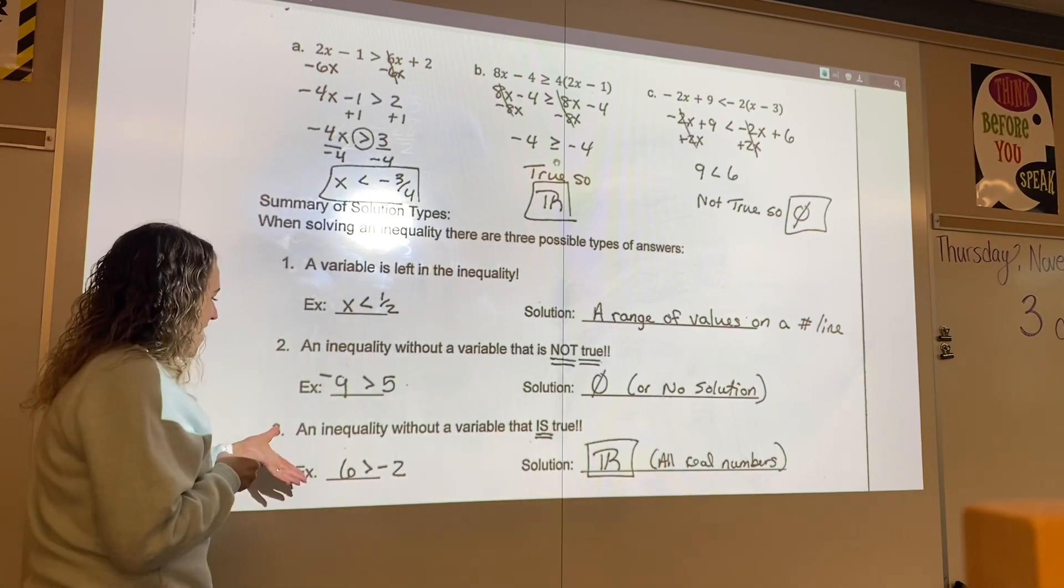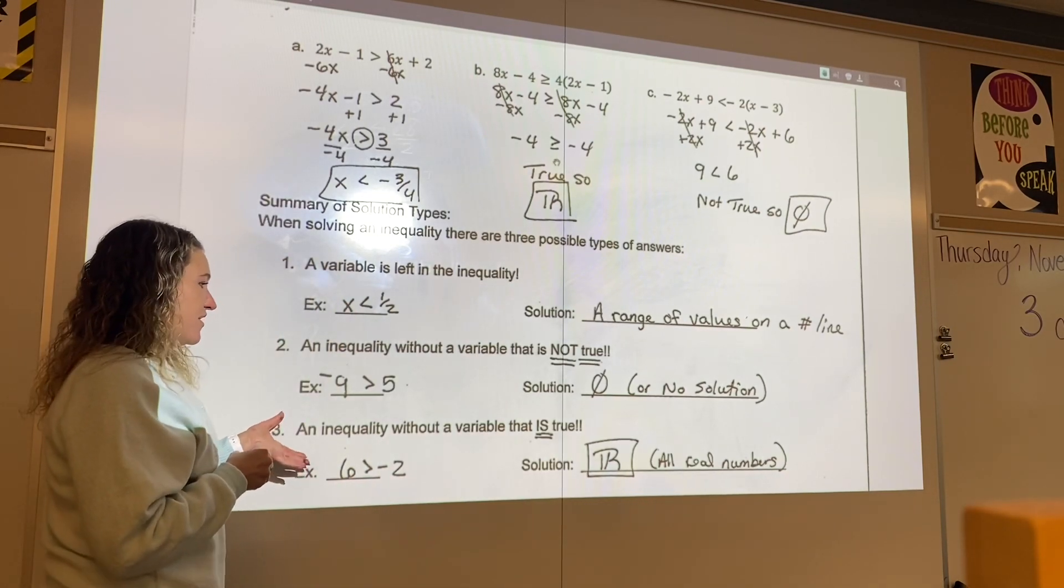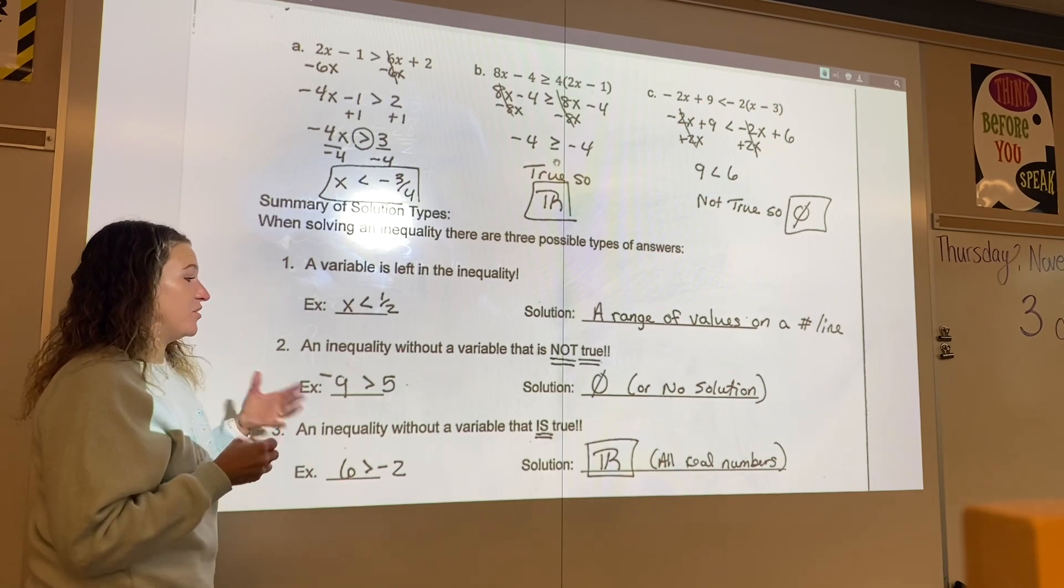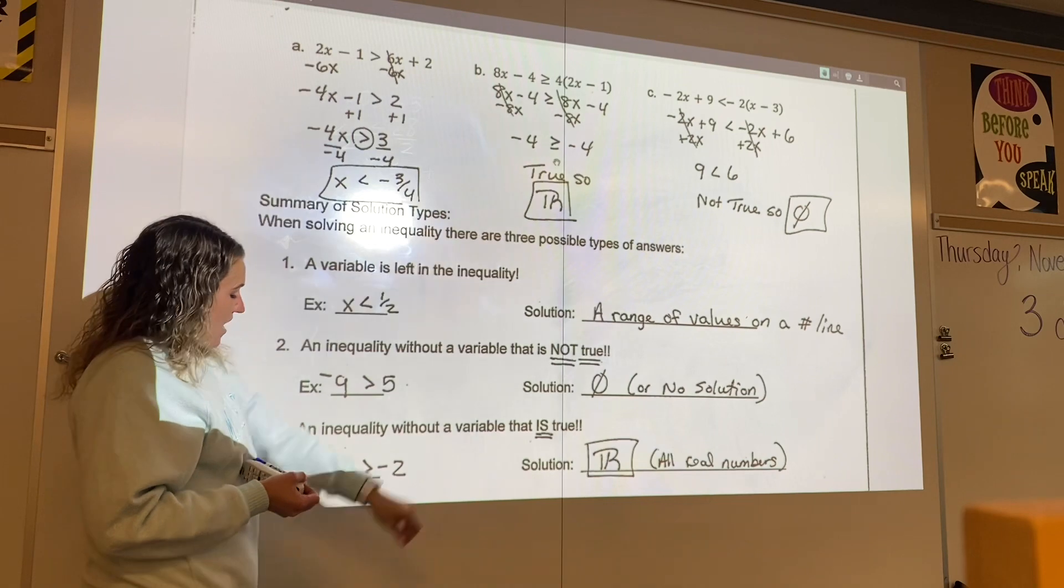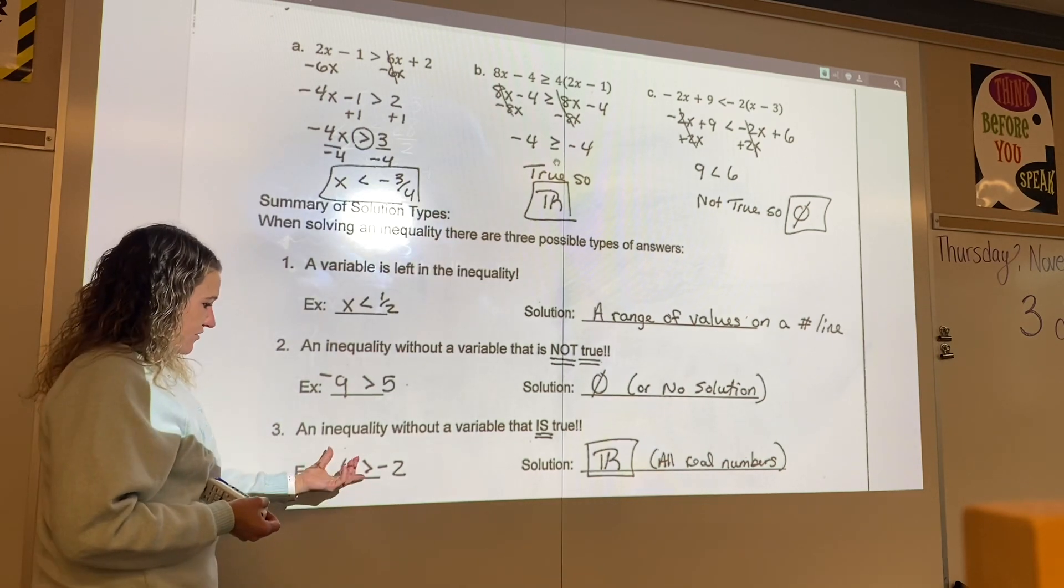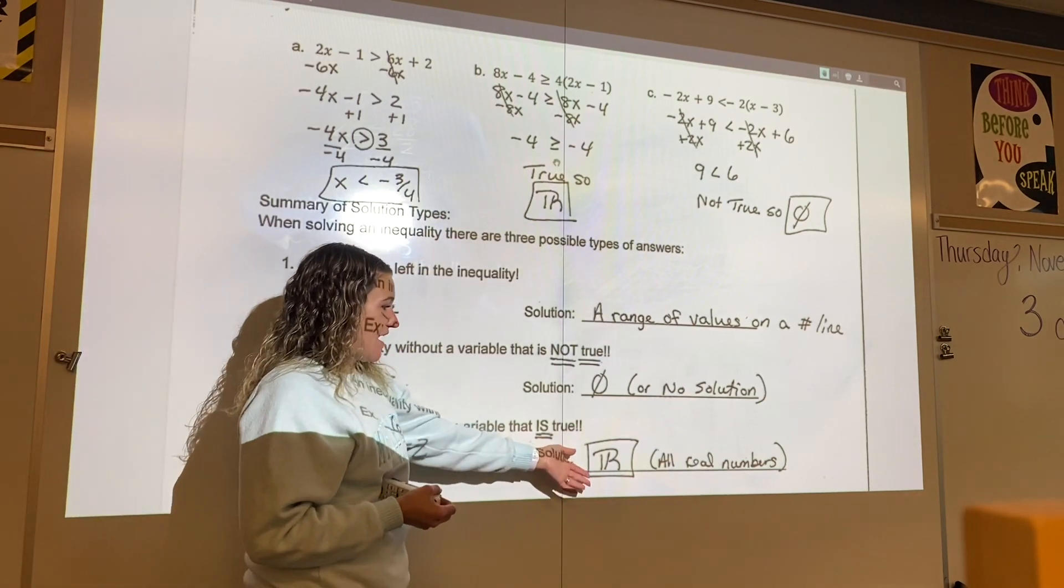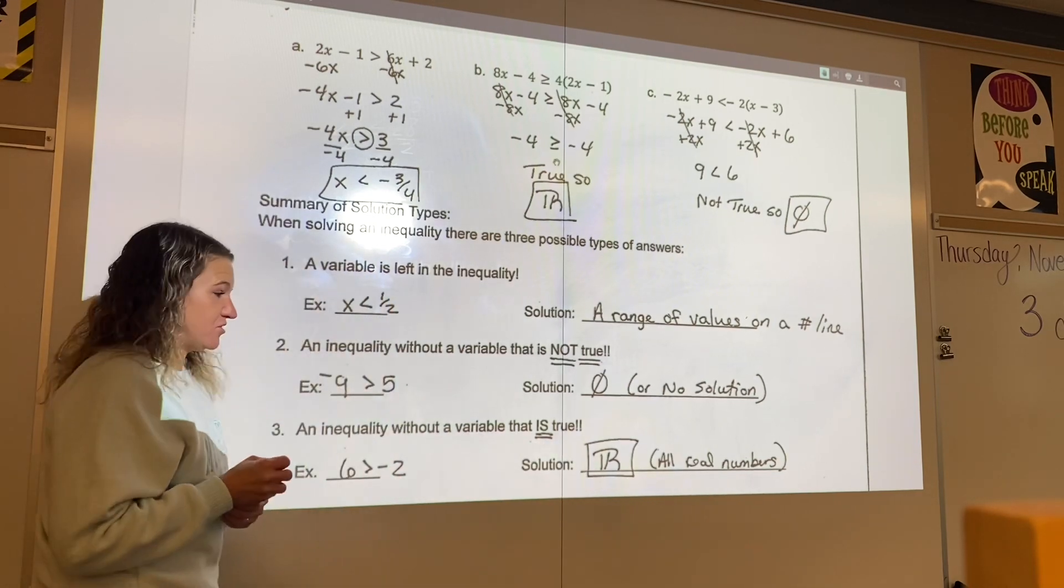And lastly, inequality without a variable that is true. So that's like there are infinitely many or all real numbers. Or 6 is greater than negative 2. We know that's true. Then your solution again is all real numbers or infinitely many solutions.